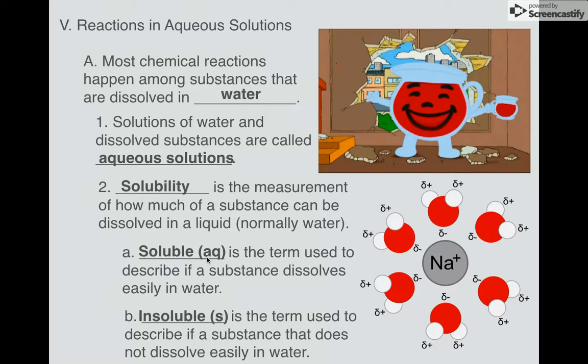The symbols that we use are the ones from our chemical equations. So AQ means soluble. S means insoluble. So AQ means that you have your nice little solution of Kool-Aid here. But S would be something that doesn't dissolve in water. Like, if you put a chunk of iron into a thing of water, nothing's really going to happen. The iron's not going to spontaneously dissolve into the liquid.